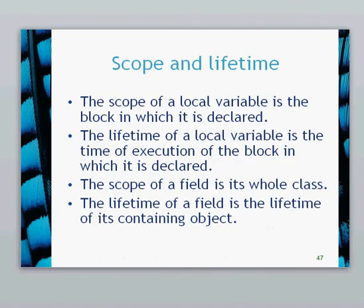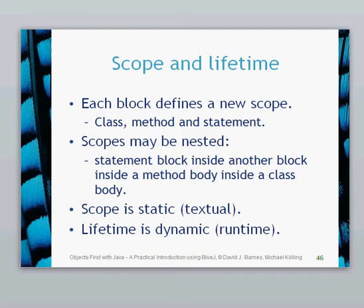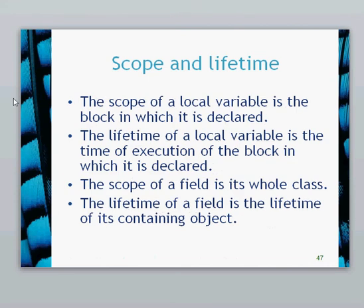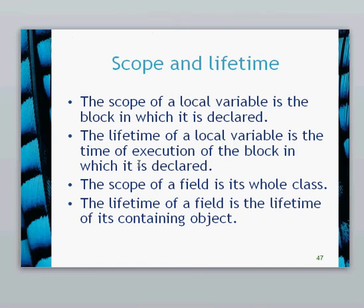The scope of the variable is the block in which it's declared. The red in our diagram defines a block — that is a block, and the class itself is defined as the class block. The lifetime of a local variable is the time of execution of the block in which it's declared. So for the time that the red block — which is the constructor — is executed, that is the lifetime of any variables declared or defined there. The scope of the field is its whole class, and the lifetime of the field is the lifetime of its containing object. However long the object lasts is however long the field will last.